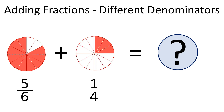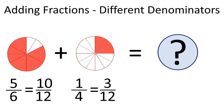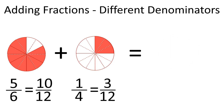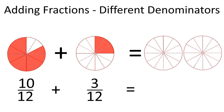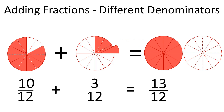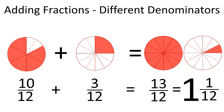This is where equivalent fractions come in handy. Watch our video about equivalent fractions on our channel. In our example, each whole needs to have 12 equal parts, so we can rewrite both fractions as equivalent fractions with a common denominator. Thus, we can rewrite 5 sixths as 10 twelfths and 1 fourth as 3 twelfths. Since each fraction now has the same denominator, we can add our parts together. 10 twelfths plus 3 twelfths equals 13 twelfths, which we can write as a mixed number of 1 and 1 twelfth.